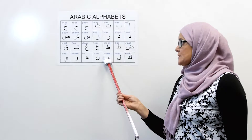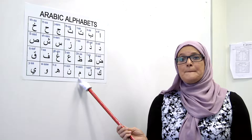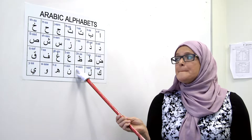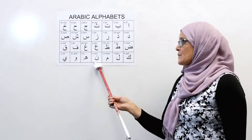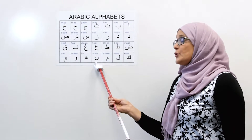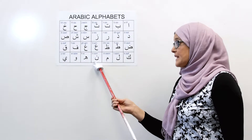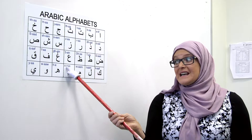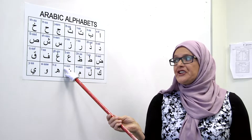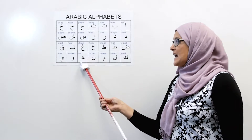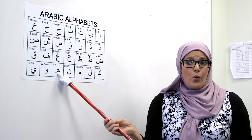Next one is Meem. The sound is mmm, mmm — like 'mom.' Next one is Noon, just like the time noon. The name of the letter is Noon but the sound is like 'no.'